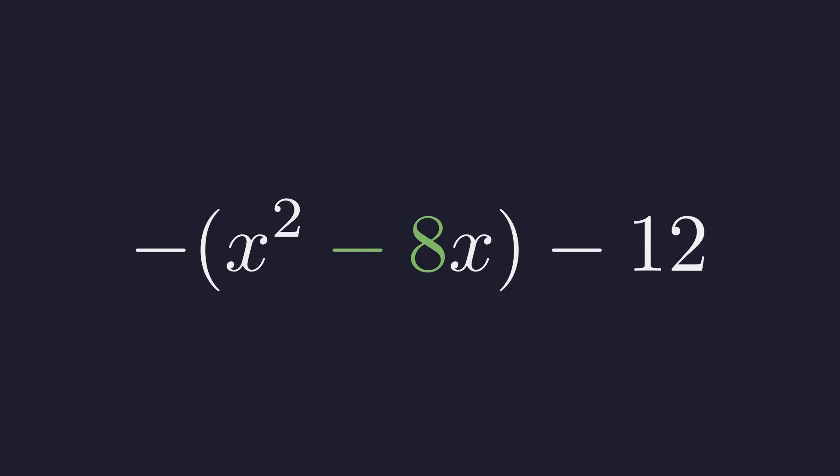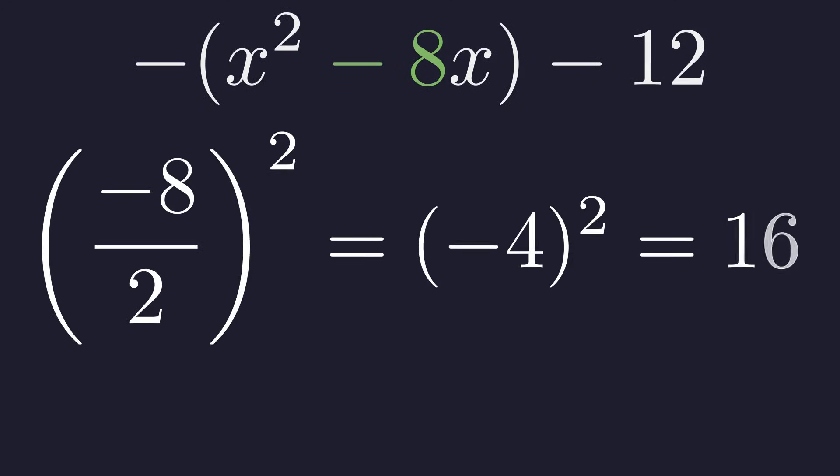Now, focus on the expression inside the parentheses. To complete the square, we take half of the coefficient of x, which is negative 8, resulting in negative 4. We then square this result, negative 4, which gives us positive 16. This is the number we need to create a perfect square trinomial.